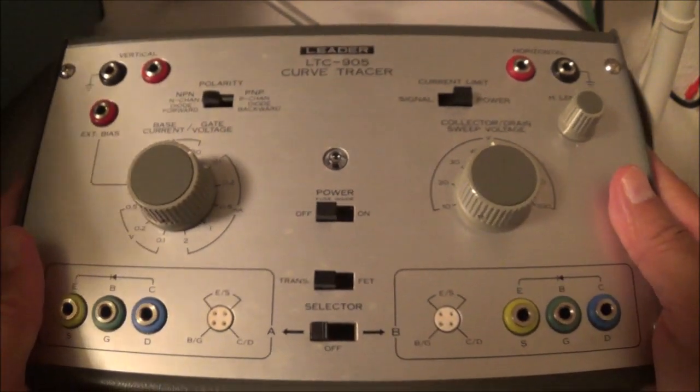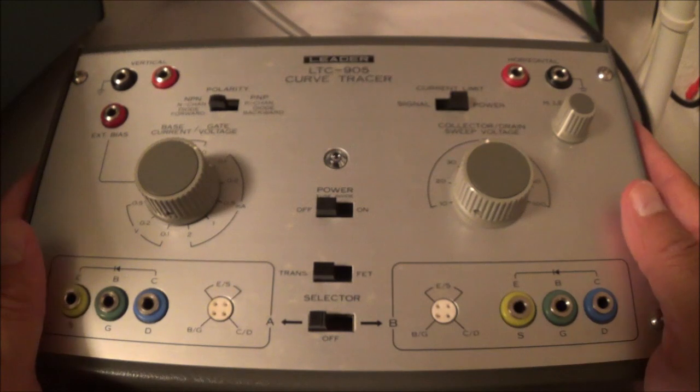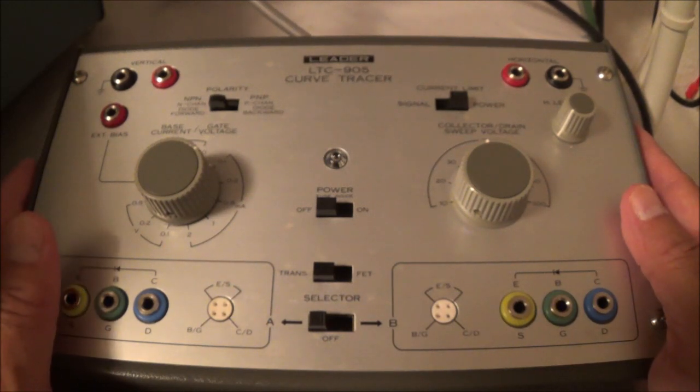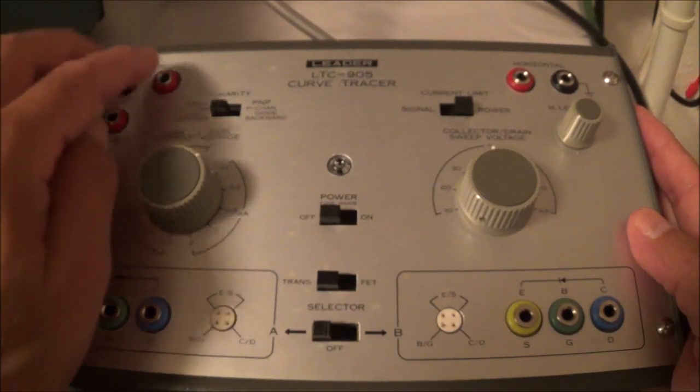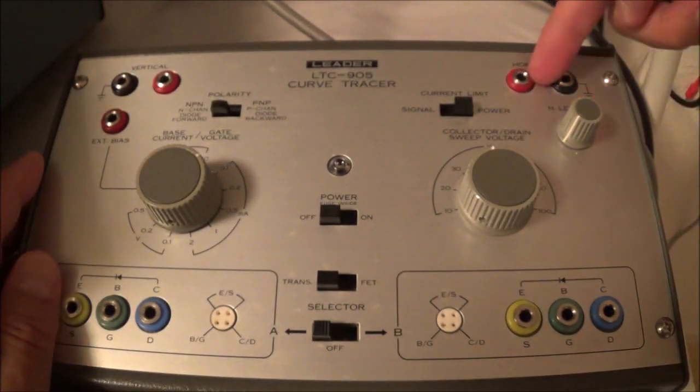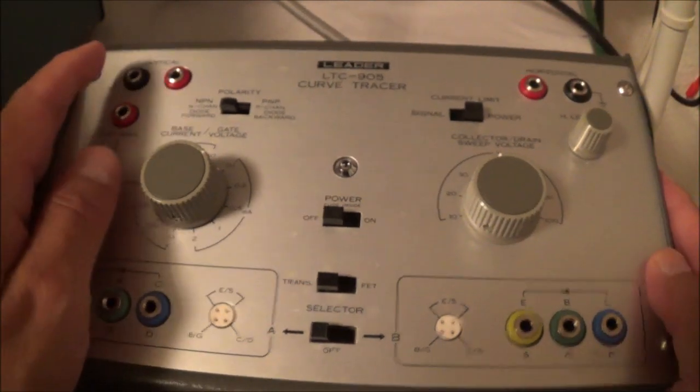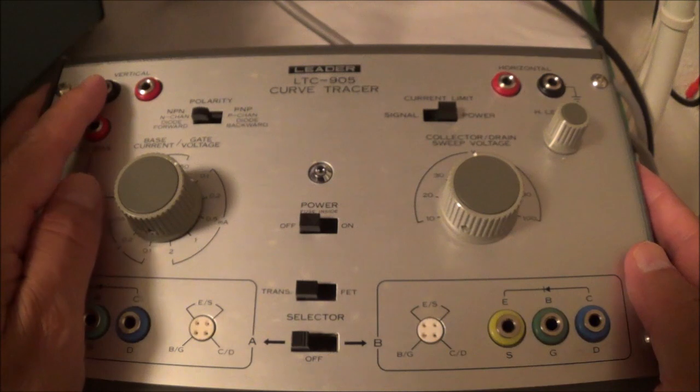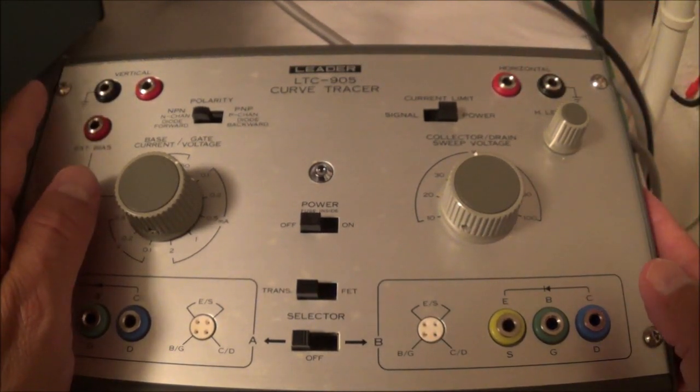If we take a quick look at the layout here, on the left it says vertical and here on the right is horizontal. So this hooks up to the vertical input of the scope and this to the horizontal input. Of course you have to put the scope in XY mode or external.